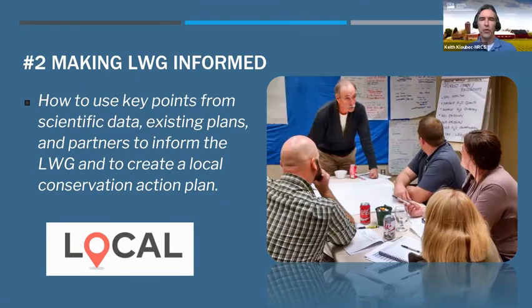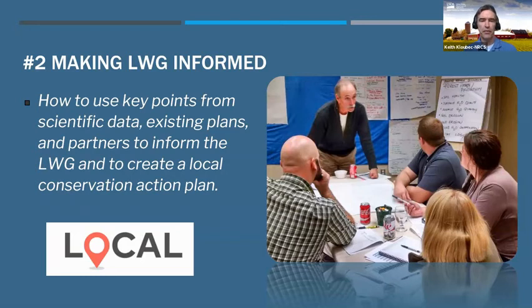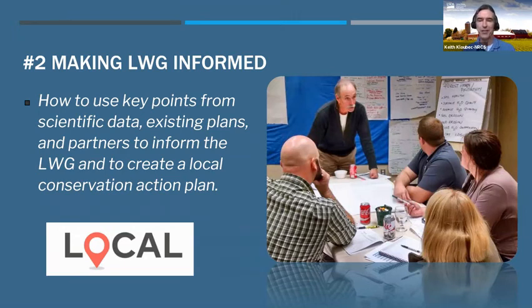Session two was making local working groups informed. It focused on how to use key points from scientific data, existing plans, and partners to inform the local working group process and create a local conservation action plan. Specific topics covered include utilizing a natural resource inventory, aligning one watershed one plan planning, SWCD comprehensive and other plans, sharing technical findings and reports with the public and the local working groups, developing a conservation needs assessment, and creating a conservation action plan.